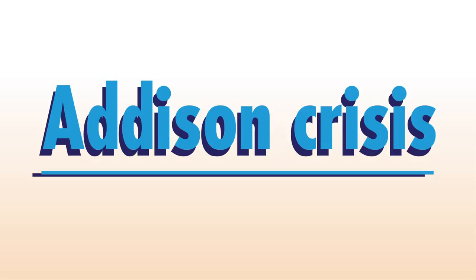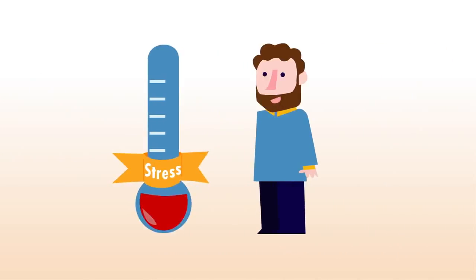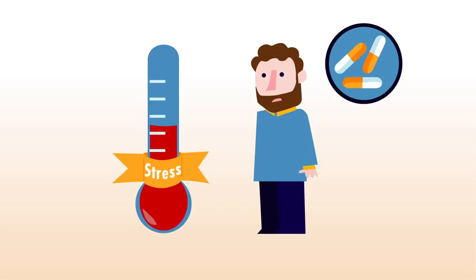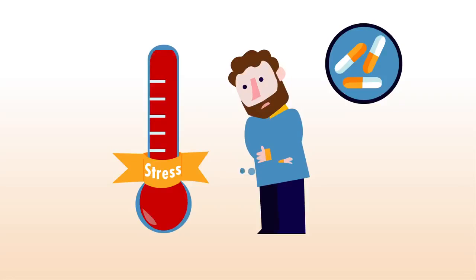Alright, so what is an Addison Crisis? It's a very serious stress situation where your normal dose of stress hormone isn't enough anymore. In situations like this, your body has a huge shortage of stress hormone, and this can be life-threatening.